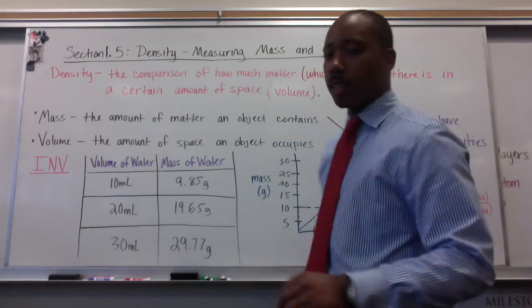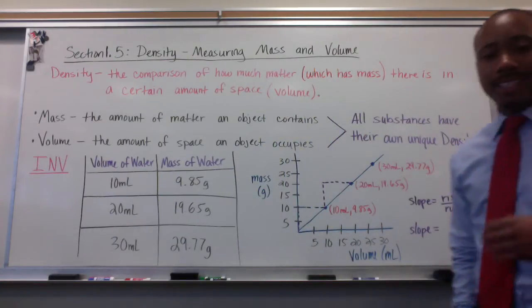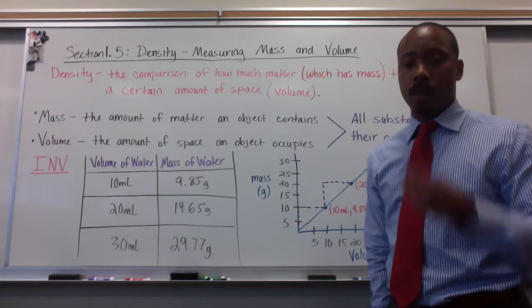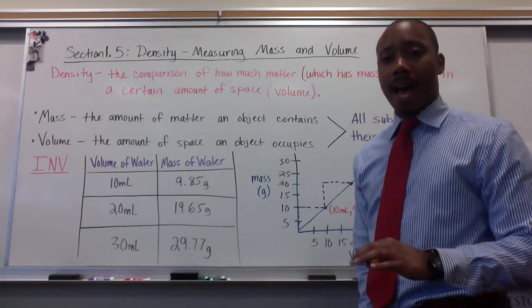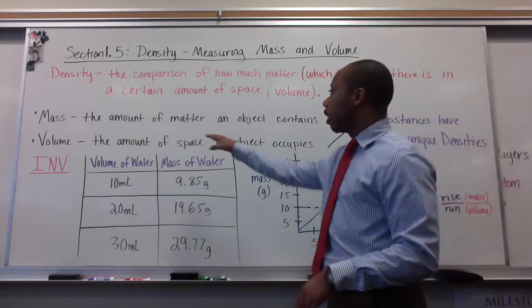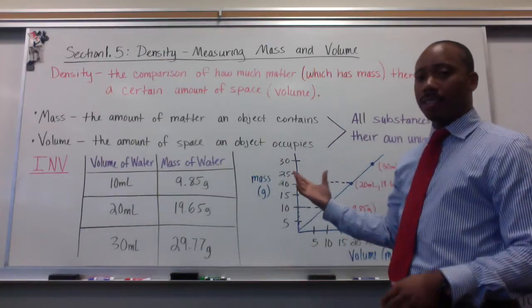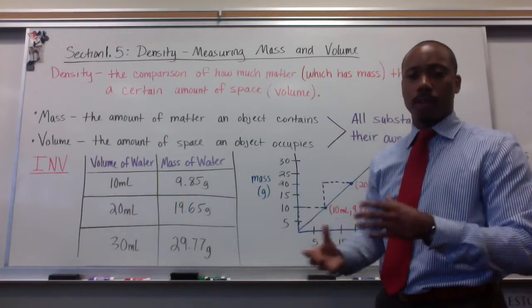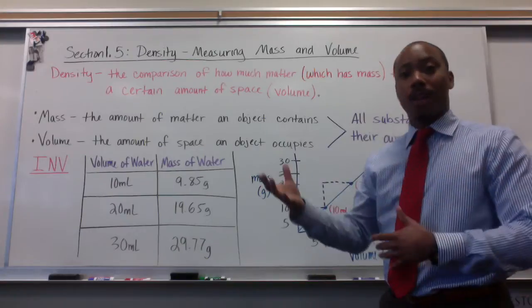Density is defined as the comparison of how much matter there is in a certain amount of space. We know that all matter has mass. Mass can be defined as the amount of matter an object contains. They're circular definitions. One involves the other, and the other involves the one.